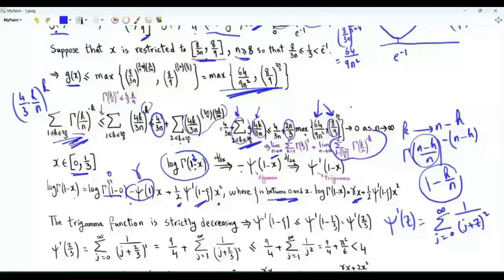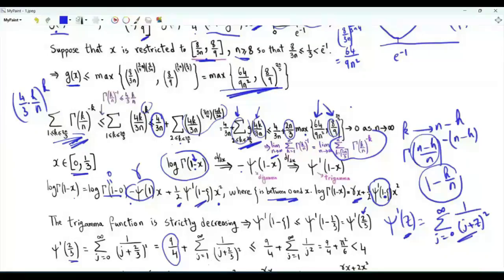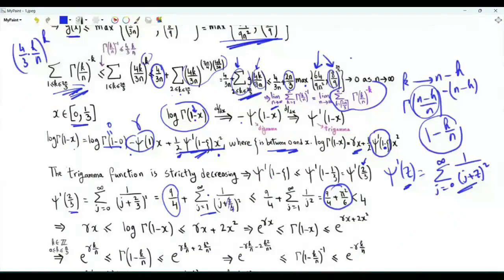The trigamma function ψ₁(z) = Σ(j=0 to ∞) 1/(j+z)² is positive and decreasing in z. We upper bound ψ₁(1−ζ) by ψ₁(2/3): when j=0 this gives 9/4, and the remaining sum over positive j is bounded by ζ(2) = π²/6. Thus ψ₁(2/3) ≤ 4. This gives the two-sided bound: γx ≤ log Γ(1−x) ≤ γx + 2x². Exponentiating: e^(γx) ≤ Γ(1−x) ≤ e^(γx + 2x²).